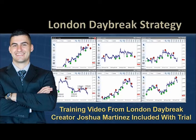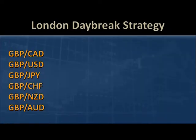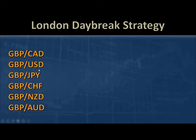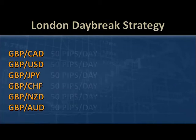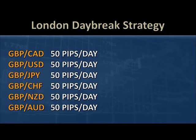Take some notes as we're going through this, because we're about to go into the live market. On your screen right here you're going to see these are the six currency pairs we're going to utilize. We're going to use the Great British Pound Canadian dollar, the Great British Pound US dollar, Great British Pound Japanese yen, Great British Pound Swiss franc, Great British Pound New Zealand dollar, and Great British Pound Australian dollar. I'm going to pull my charts and teach you the London Daybreak Trading Strategy — a very simple strategy going after a minimum of 50 pips per currency pair per day.